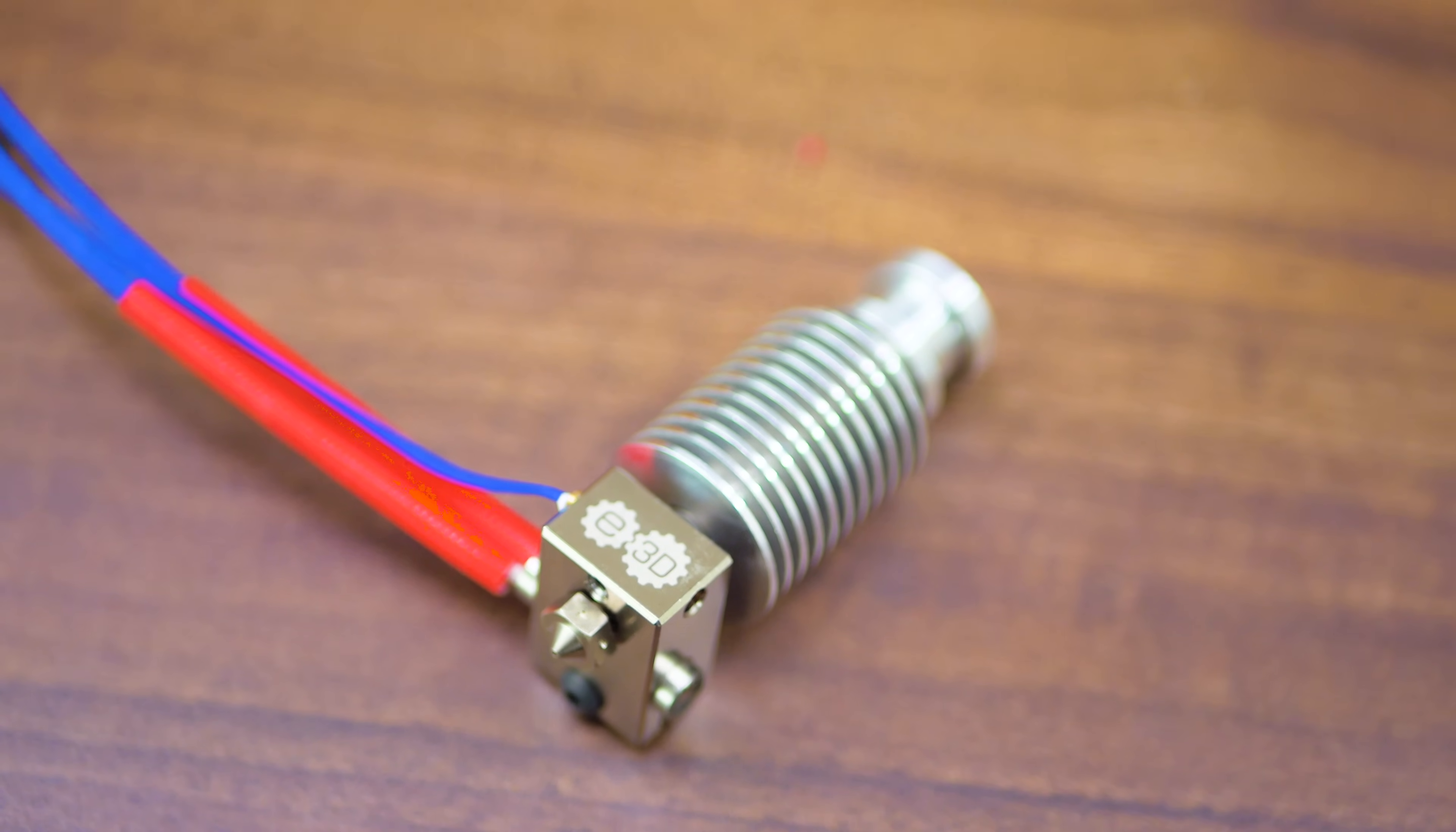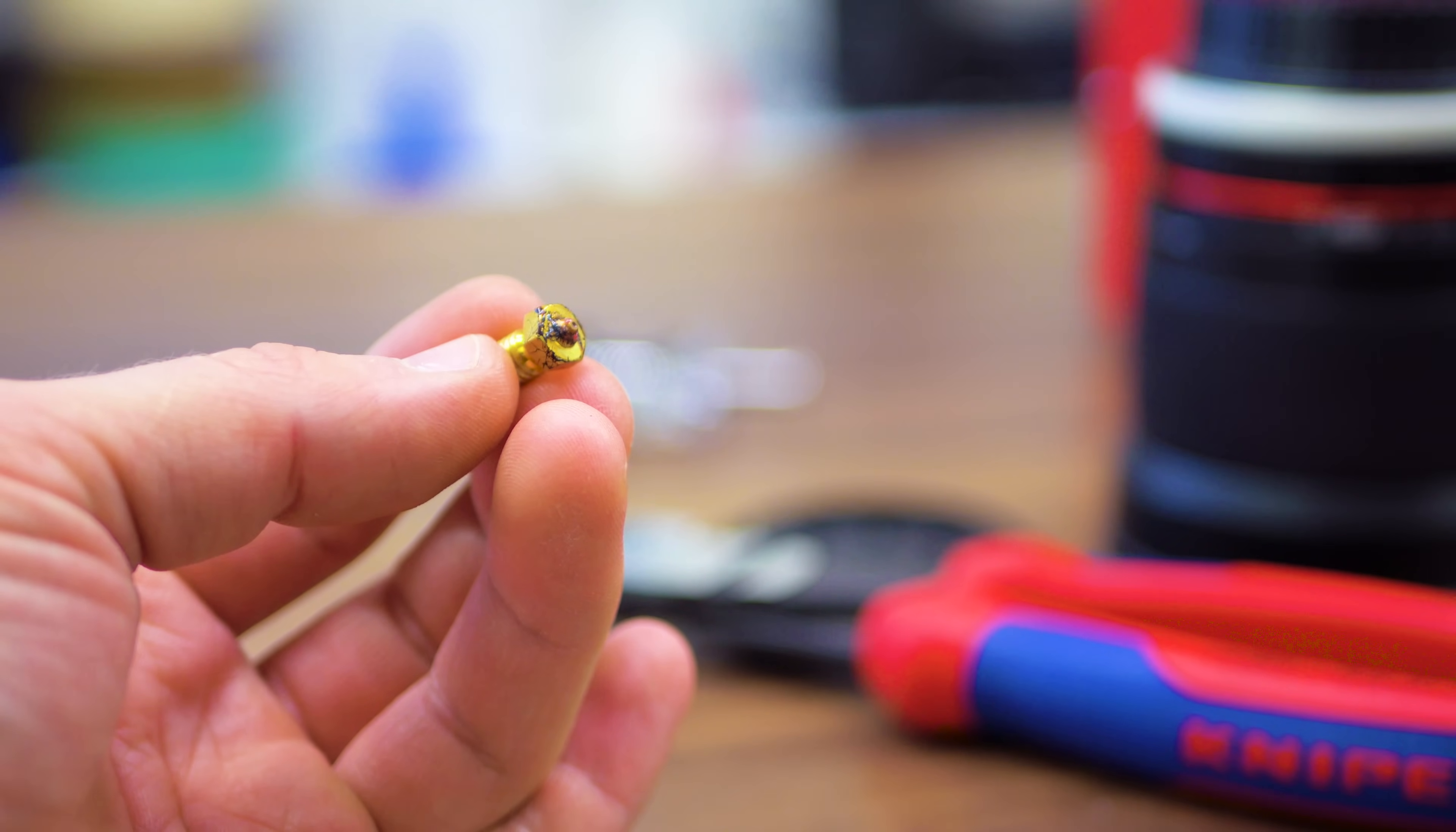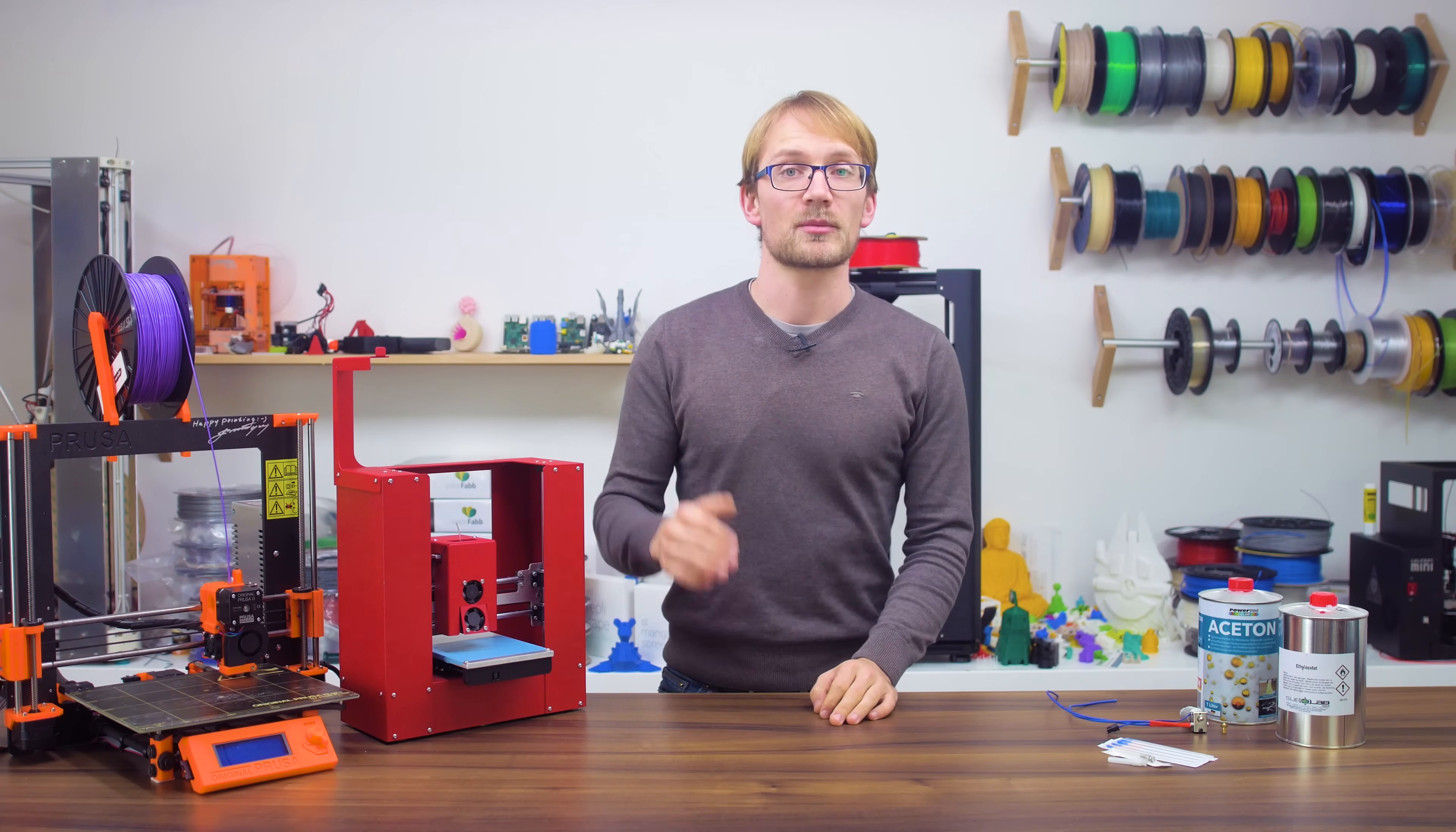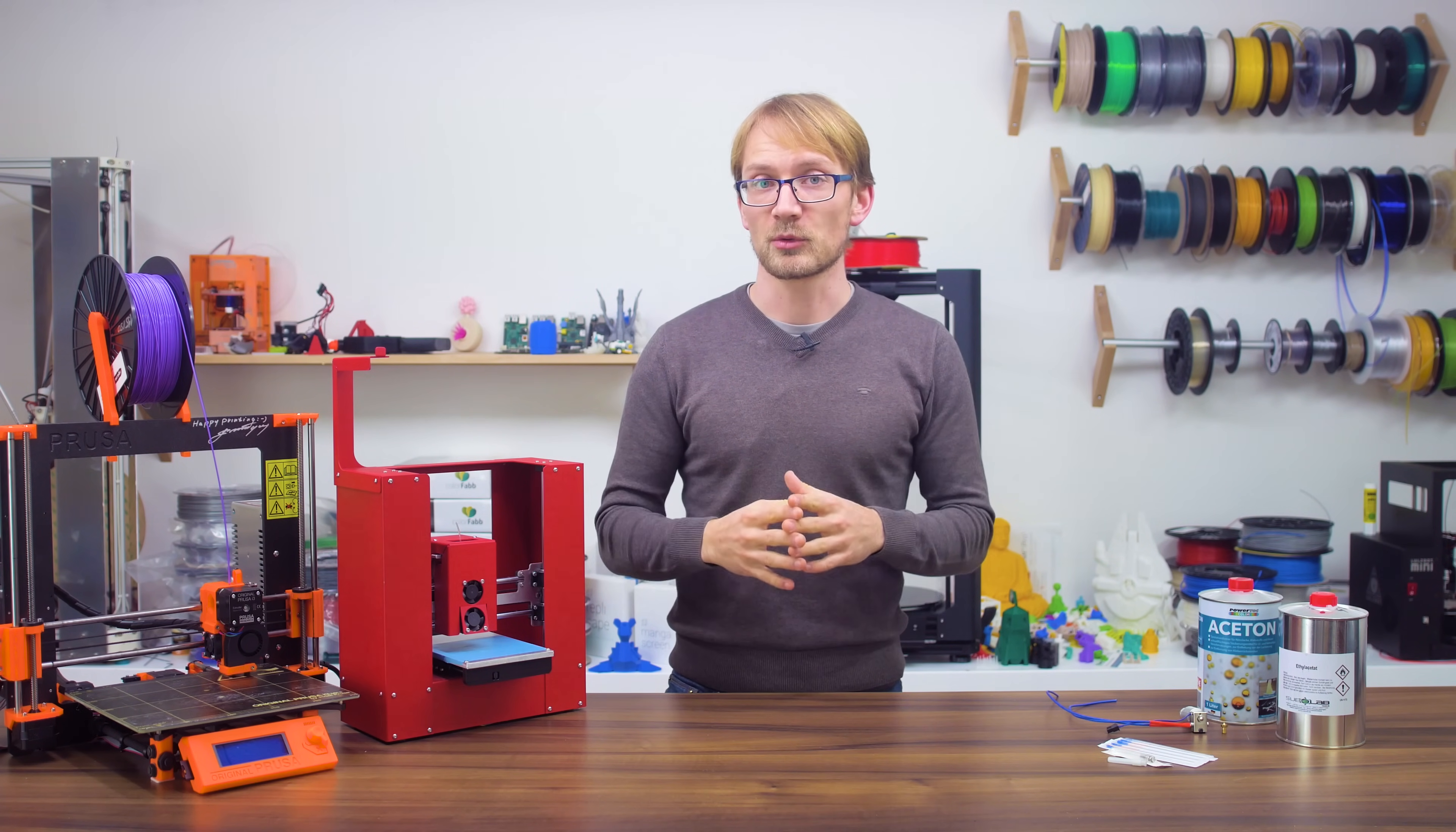Now if both of these methods don't get your nozzle unclogged, you can always go a step further and clean the nozzle outside the printer. Click up here to learn how to remove your hotend's nozzle safely, but if you've got the option to, do a cold pull first to empty out as much material from the nozzle as possible. With the nozzle removed, you have the choice of either removing the gunk mechanically or by using solvents.